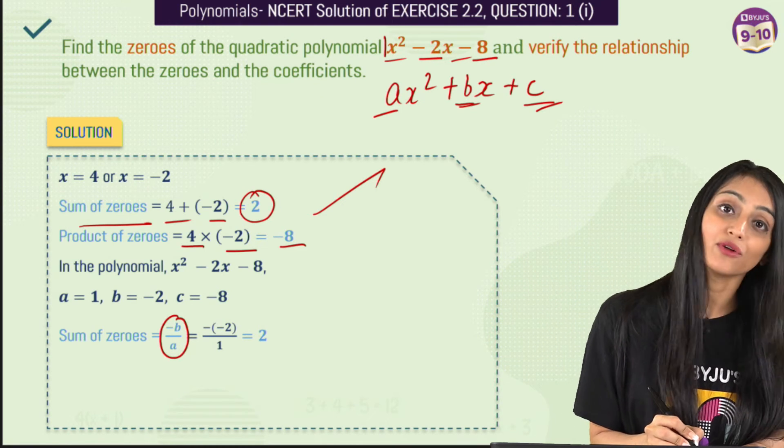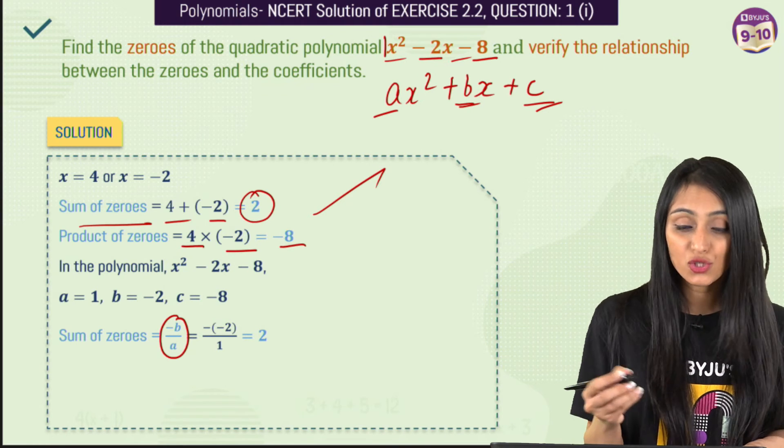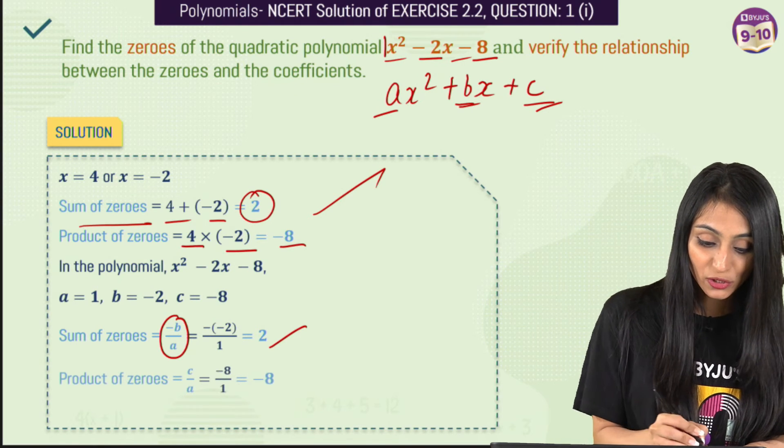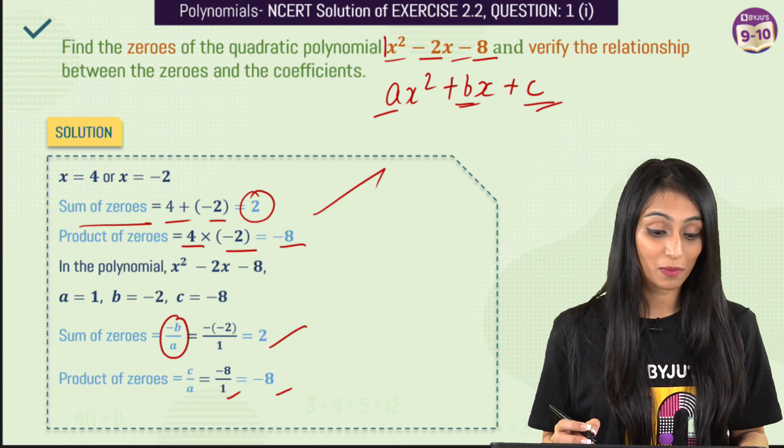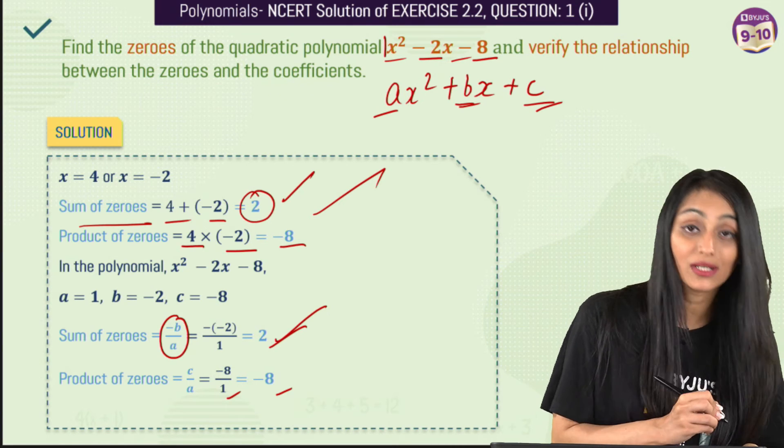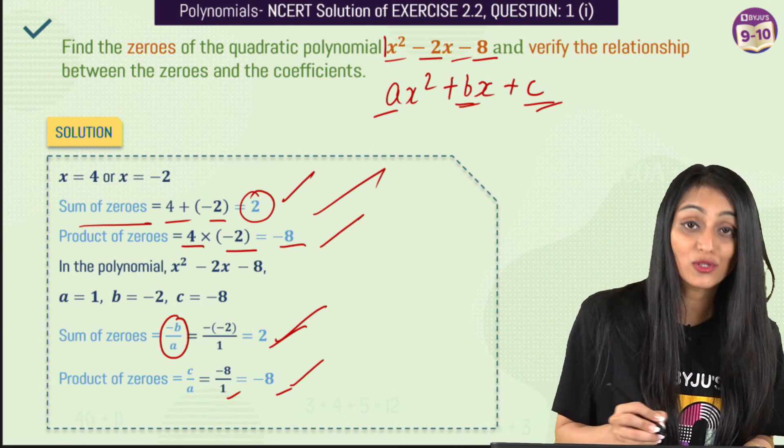So minus b by a from here it's going to be minus of minus 2 by 1 which is 2 and product of zeros would be minus 8 by 1, that's minus 8 and you can see that sum of zeros over here, that is same, product of zeros is also same. So hence verified.